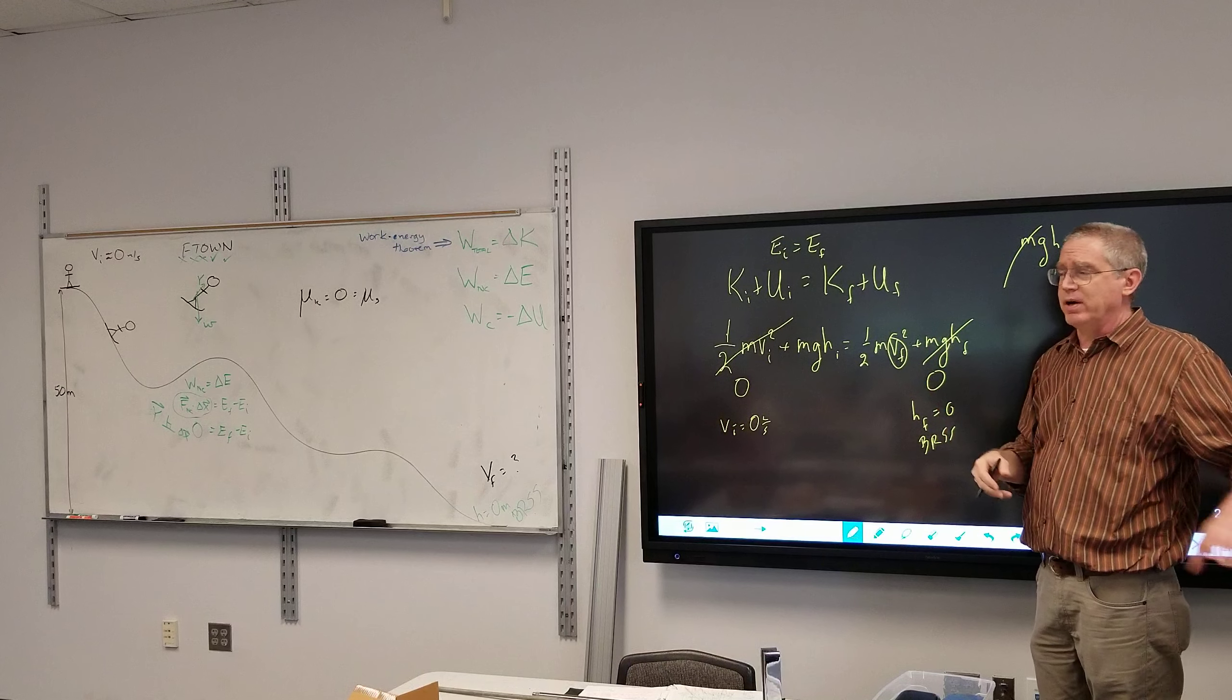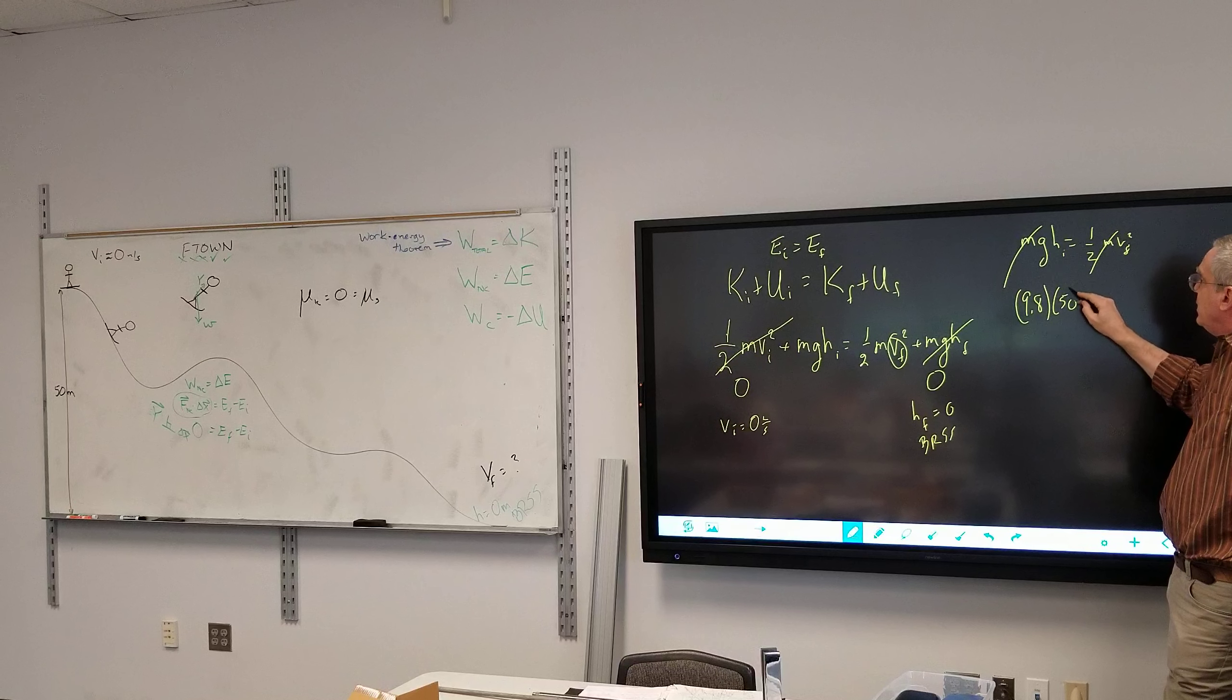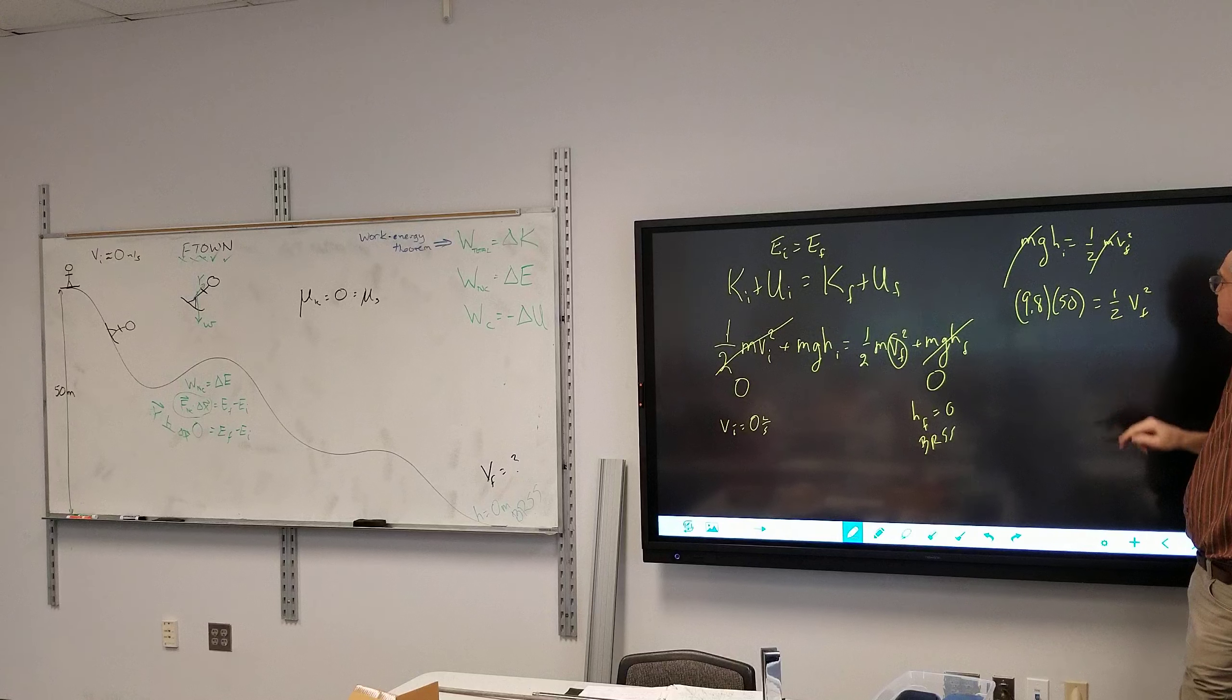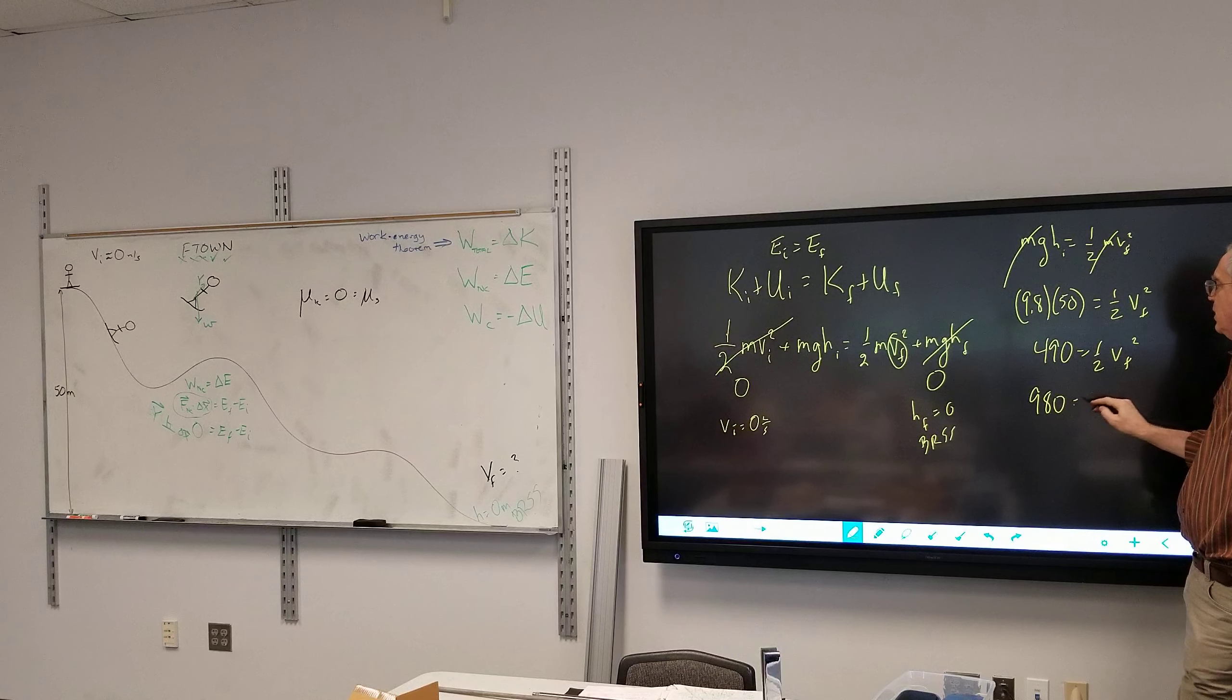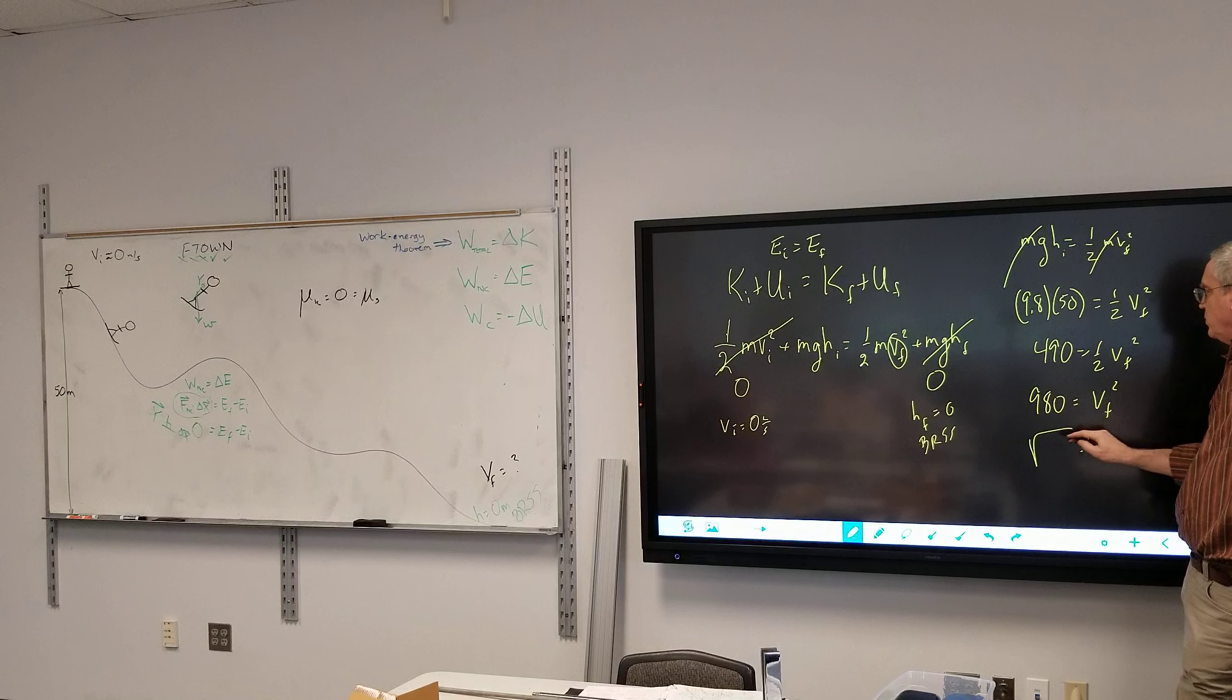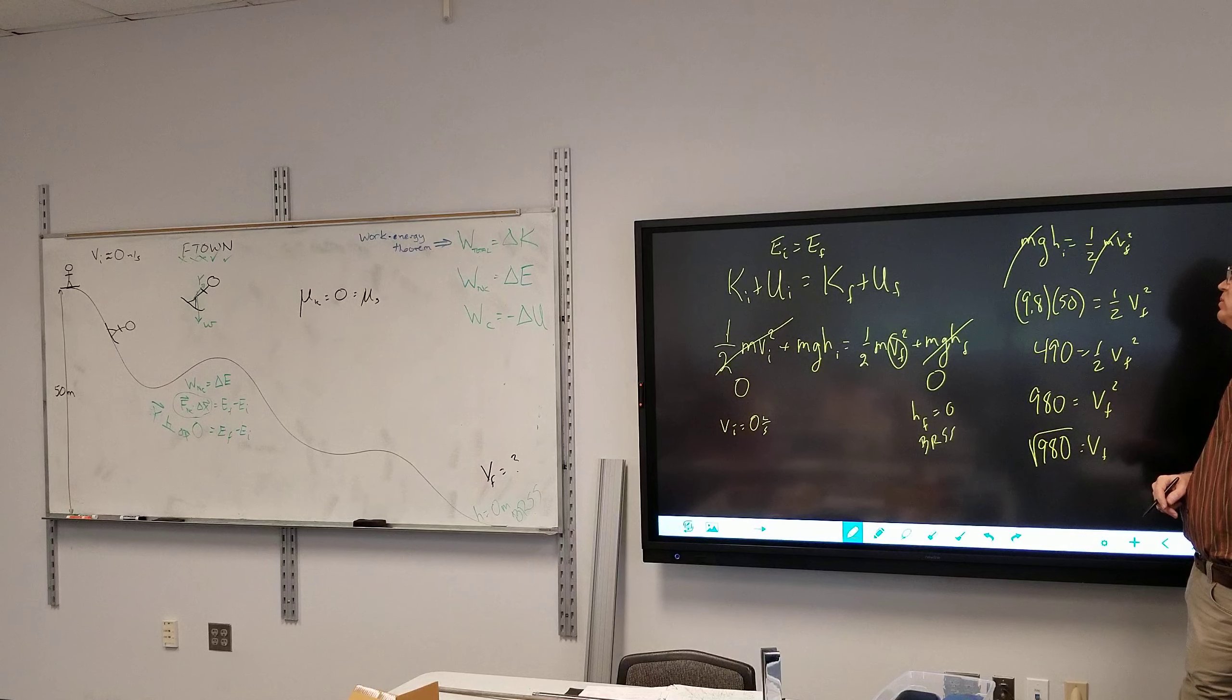The initial is equal to one half mv final squared. Now, if you want to make up a mass for the person, make it a kilogram. That way, you're multiplying by one. Now, we're left with 9.8 times the initial height of 50 is equal to one half v final speed squared. This is 490 is equal to one half v final speed squared.